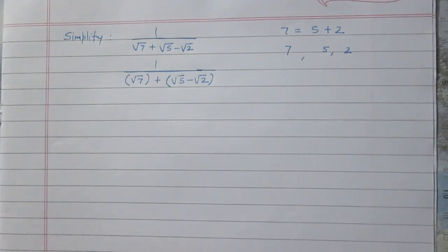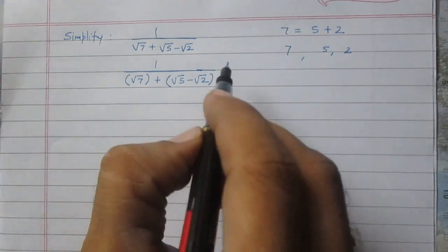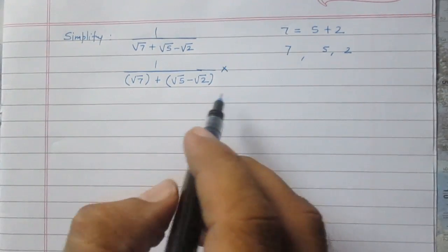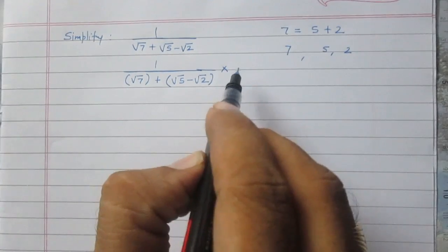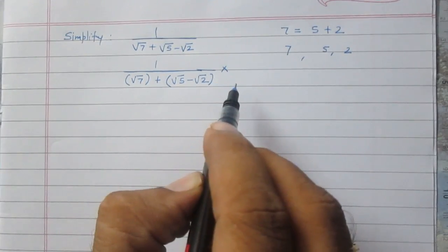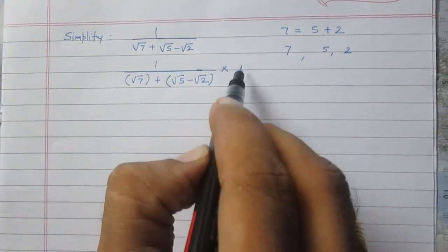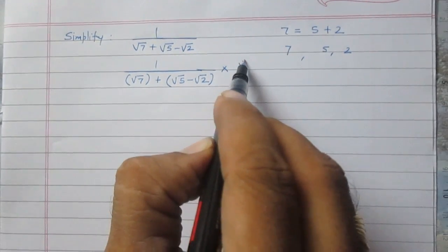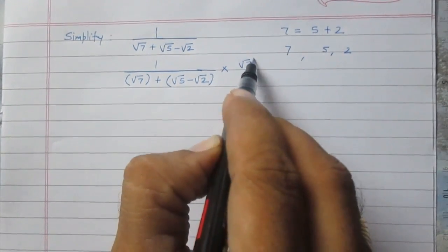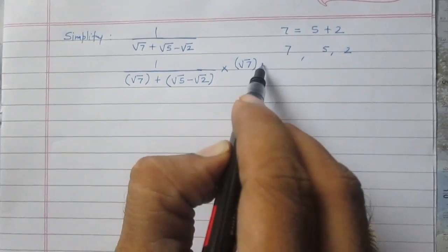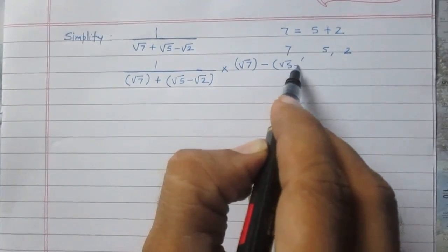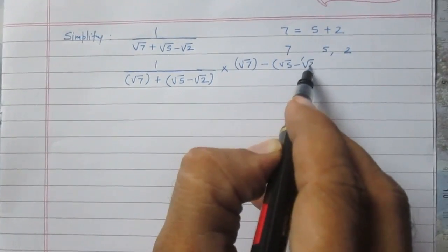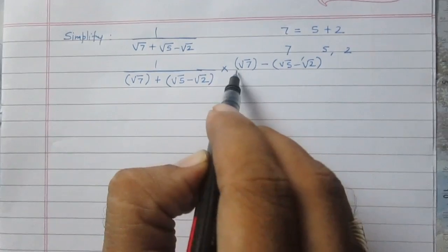After this, we will rationalize this fraction. We can rationalize by multiplying both numerator and denominator by square root of 7 minus the quantity square root of 5 minus square root of 2.